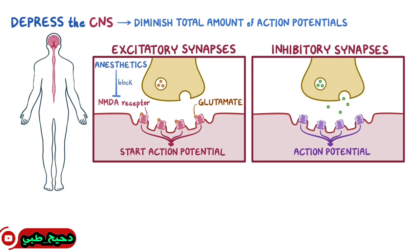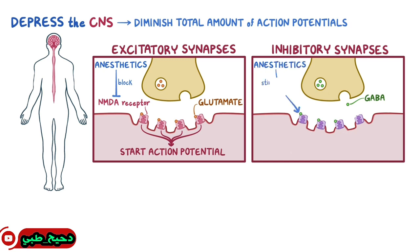Inhibitory synapses do the opposite. They release the inhibitory neurotransmitter called GABA, which binds to the postsynaptic neuron and keeps it from firing. So certain anesthetics work by stimulating these GABA receptors or by increasing their sensitivity to GABA.